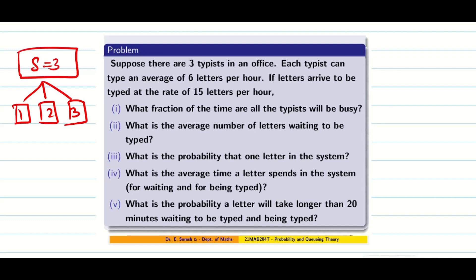Let us read the question. Each typist can type an average of six letters per hour. If the letters arrive to be typed at 15 letters per hour, both are per hour. They can type six letters per hour, that means mu equals 6 per hour. But every hour they get 15 letters, so lambda equals 15 per hour. Lambda and mu are identified. Three typists are there, that means it is going to be a multi-server.